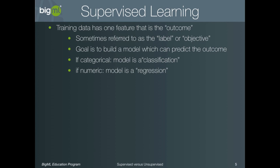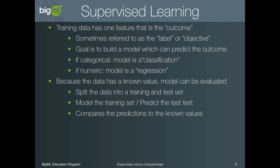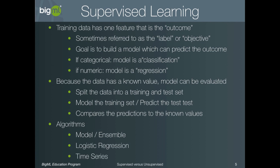Because the data has a known value for each example, the model can also be evaluated. This can be done by splitting the training data into two disjoint sets: the training set and the test set. The model is built on the training set and used to make a prediction for each instance in the test set. Since you have the predicted value and the known value for every example in the test set, you can estimate the performance of the model. The BigML algorithms for supervised learning include models and ensembles, logistic regression, and time series.